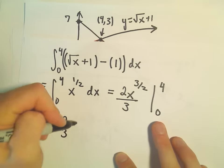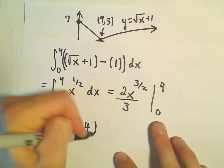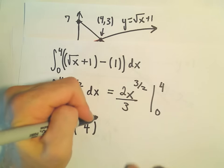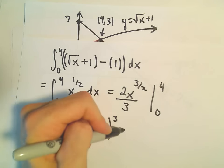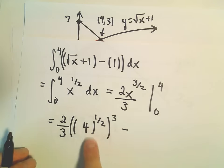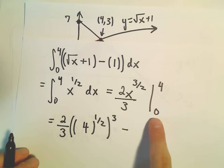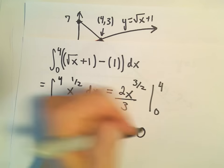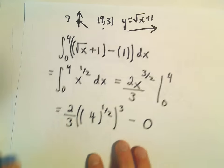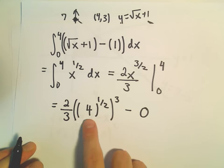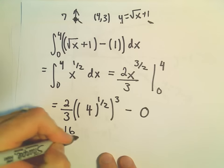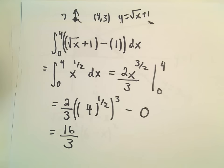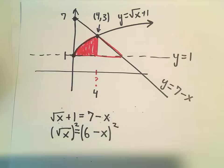Then from 0 to 4. So if we plug in 4, we'll get 2 thirds times 4 to the 3 halves power. But I'm going to write that as 4 to the 1 half cubed, just so I can think about how I like to evaluate it. When we plug in 0, we'll just be left with 0. Well, the square root of 4 is 2. 2 cubed is 8. 8 times 2, it looks like this is going to give us a value of 16 over 3. So that's just this part that we have shaded so far.